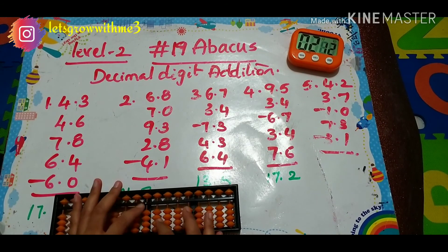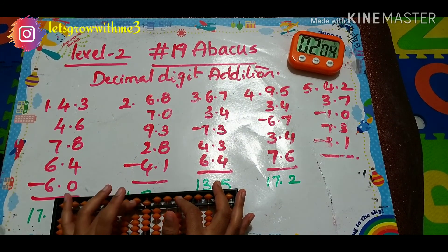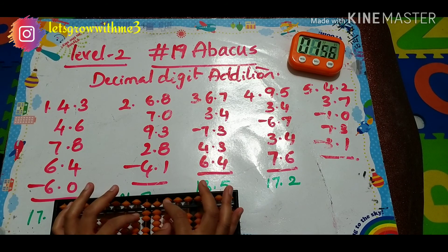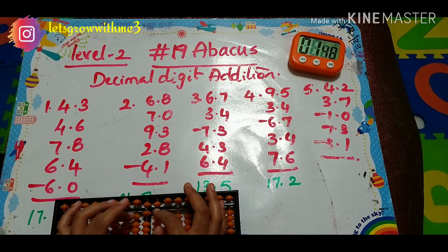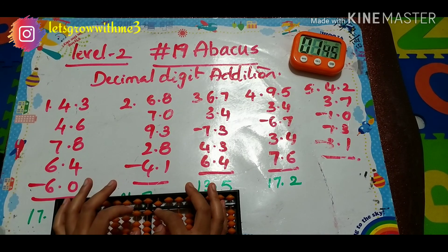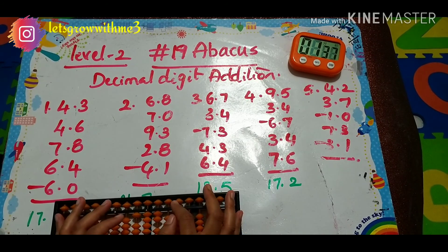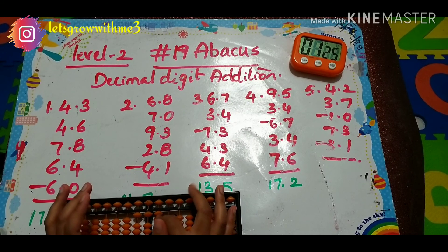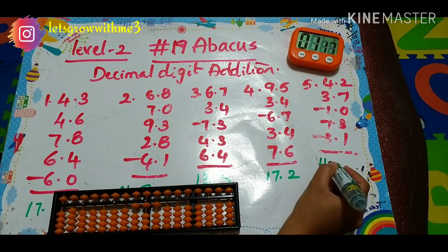Next problem: 4.2 plus 3.7. Plus 5 minus 2. Then plus 7 minus 1 — directly you can do it. Plus 7.3 — papa up, mama up, babies up. Again point 3: plus 10 minus 7.